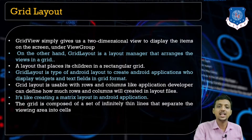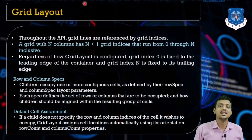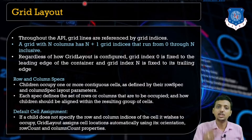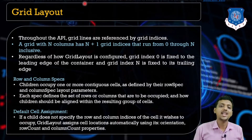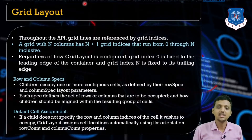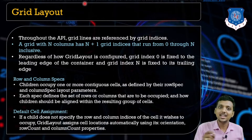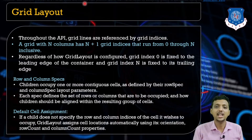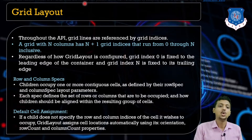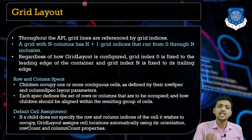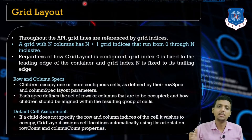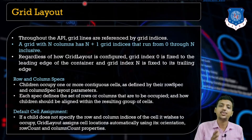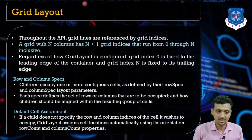Each particular box is known as a cell. In the Grid Layout, the first grid number one has index zero — same as an array, the items start with index zero. Throughout the API, the application programming interface, grid lines are always referenced by their grid indices.